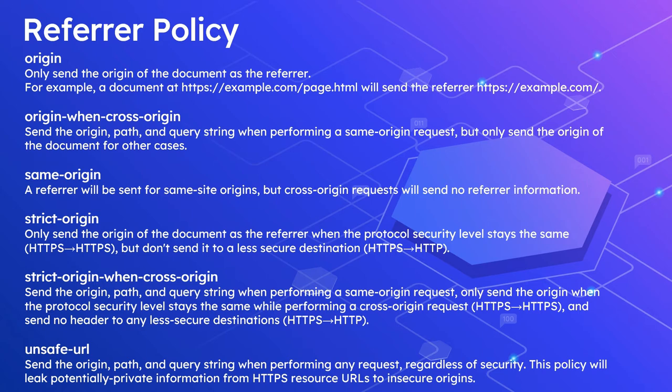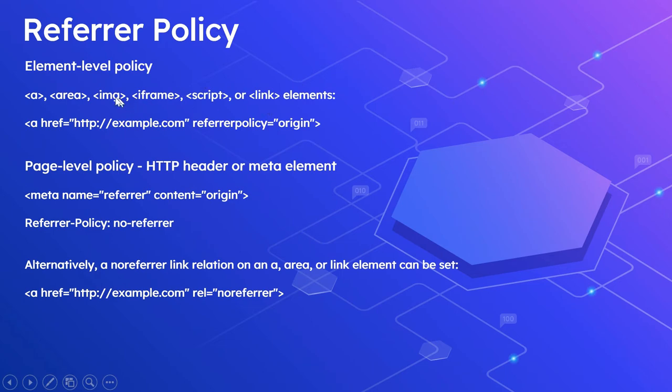The next value is unsafe-url: this sends the origin, path, and query string for any request, regardless of security — whether cross-origin or same-origin and any protocol level. This policy can leak potentially private information from HTTPS resource URLs to insecure origins, since if the source page is HTTPS but the target page is HTTP, it will try to send the full referrer header details, which can include sensitive query parameters.